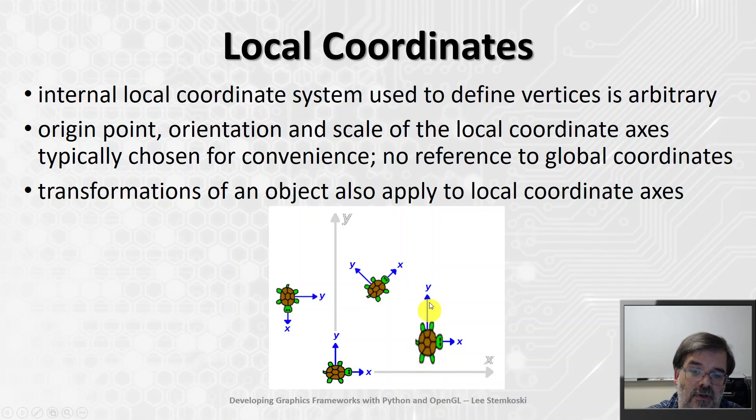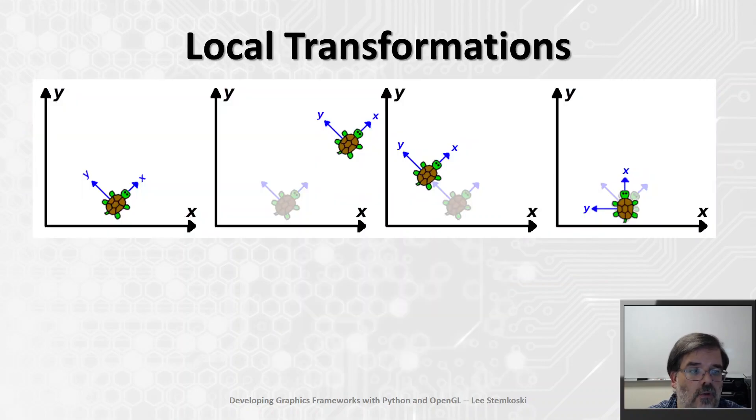And so any transformations we apply to an object are also going to transform these axes which come along with the object. And now that we have a sense of local coordinate axes, we can more easily talk about local transformations.